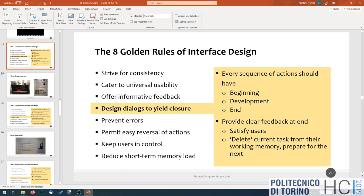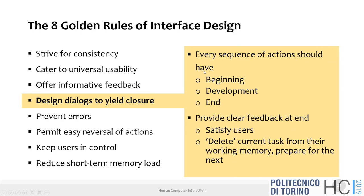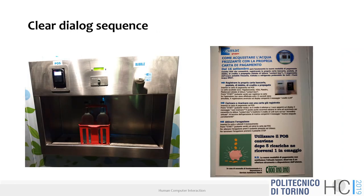Today we continue analyzing the design principles we started to introduce last week, then we'll move on to more detailed lower-level guidelines. Last week we stopped at principle number four: design dialogues to yield closure. I found an example — maybe you're familiar with the kind of water dispensers found throughout the city of Torino and surrounding villages. These are a good or bad example of a device that doesn't really yield closure.